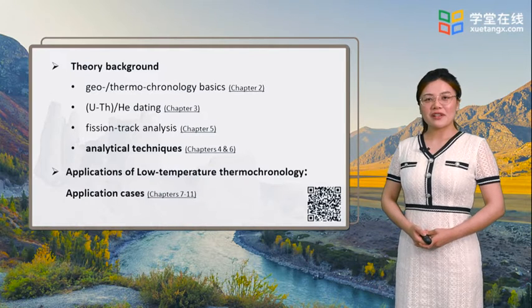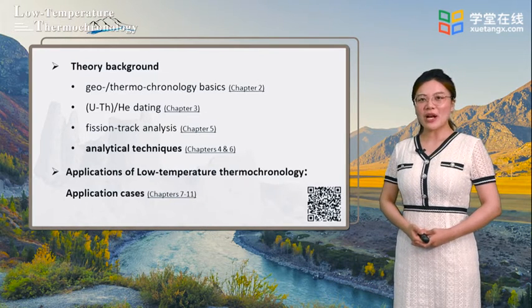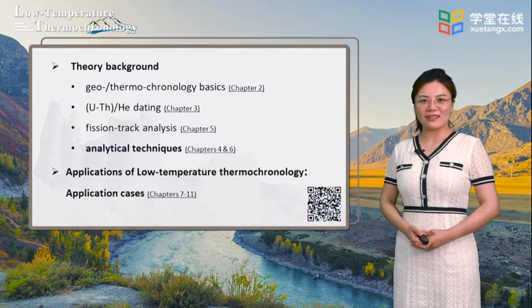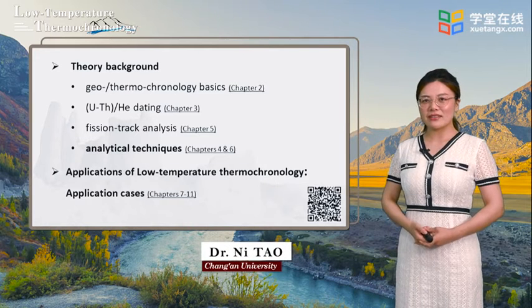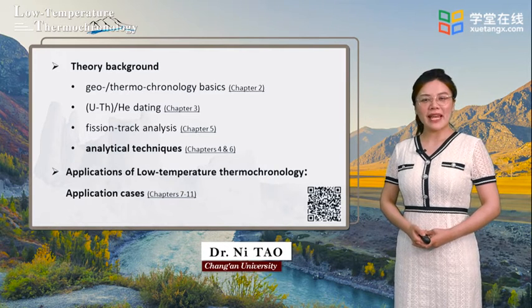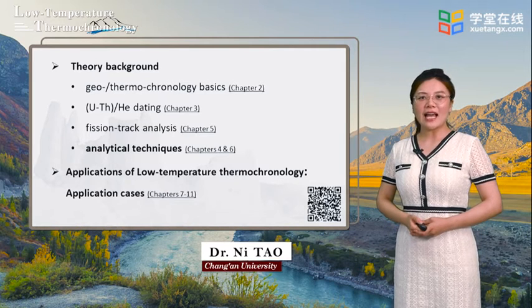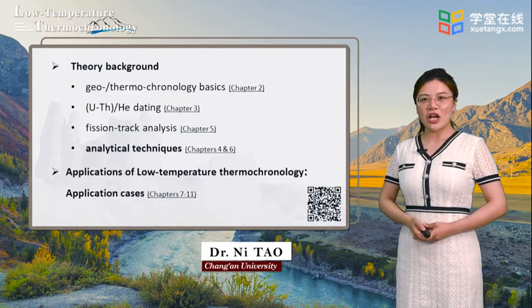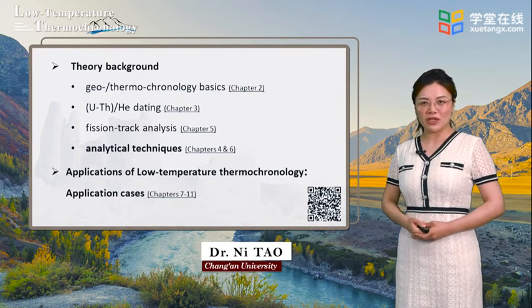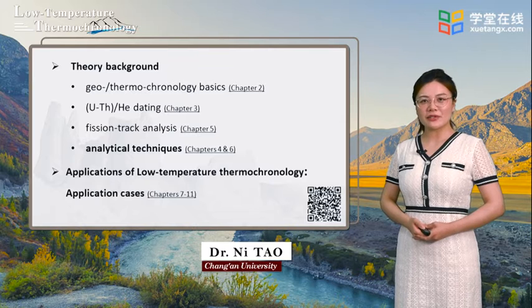The first six chapters cover theory background of Geo and Thermal Chronology. More detailed theoretical constants for uranium-thorium-helium dating and fission track analysis are in Chapter 3 and Chapter 5 respectively. Following is the analytical techniques of uranium-thorium-helium and fission track low temperature thermochronology in Chapter 4 and Chapter 6 respectively.